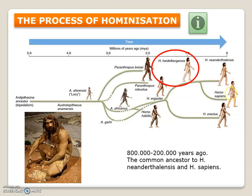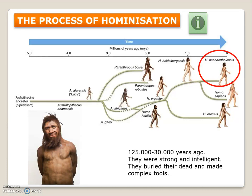Homo heidelbergensis is like our grandfather, and Neanderthals and Homo sapiens are like cousins. The Homo neanderthalensis lived in Europe, appearing approximately 130,000 years ago. They were very strong and intelligent, with a brain even bigger than ours. They were the first ones to bury their dead and made complex tools. They were hunters who lived in small groups — our evolutionary cousins.